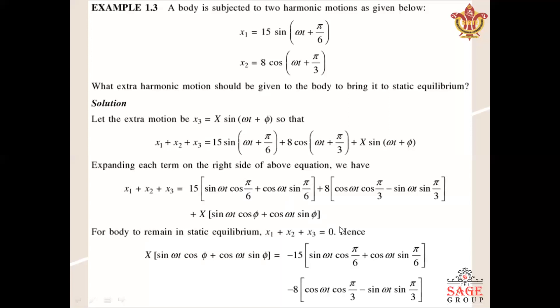Now if the body is in static equilibrium, the resultant created due to the motions must equal zero in equilibrium condition. Hence this equals zero, and we will rearrange the equation like this. Now equate the coefficients of sin ωt and cos ωt from both sides, left-hand side and right-hand side.